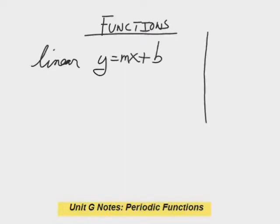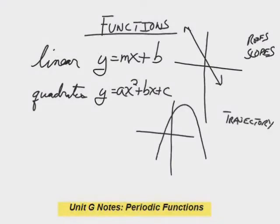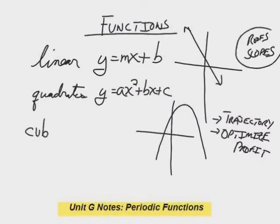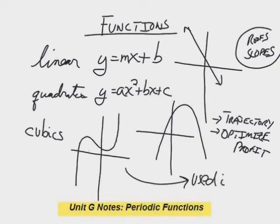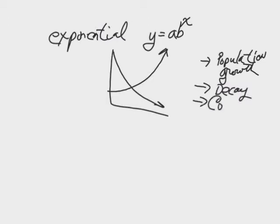So you've studied lots of different kinds of functions. You've done lines — slopes of roofs, the relationship between ages, your bank account. You've done quadratics — optimizing profits, trajectories. We did lines in grade 10, quadratics in grade 11, cubics when looking at volumes. We've also done exponentials — how mold grows or how coffee cools. Now we're studying a new kind: the sinusoidal, or periodic function. We're studying the sine curve — waves.